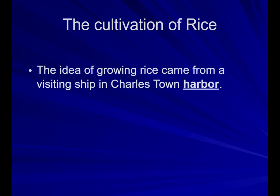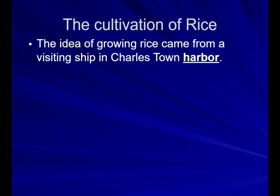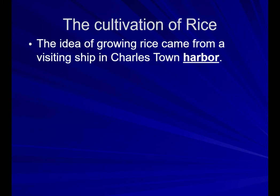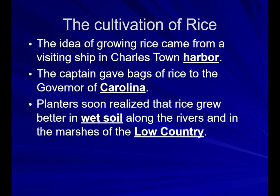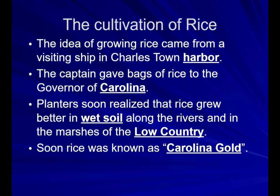The cultivation of rice: the idea of growing rice came from a visiting ship in Charlestown Harbor. The captain gave bags of rice to the governor of Carolina, and they soon realized that this rice grew better in wet soil along the rivers and the marshes of the low country, so much so that rice became known as Carolina gold.